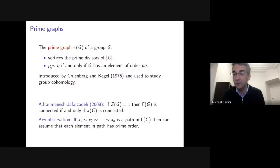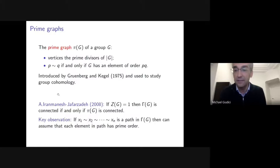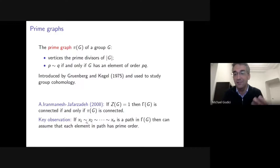Prime graphs are actually very related to the commuting graph. By a result of Iranmanesh and Jafarzadeh in 2008, if a group has trivial center then the commuting graph is connected precisely when the prime graph is connected. The key observation is: given a path in the commuting graph, you can replace each element by an element of prime order in the subgroup it generates, and if two elements of prime order p and q commute, their product has order pq, giving an edge in the prime graph.